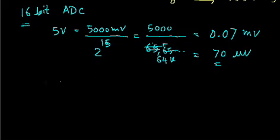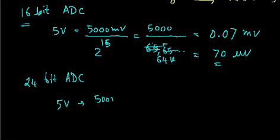However, there is a problem also. Suppose if we go to 24-bit ADC, then it will be 5 volt corresponds to 5000 millivolt and 2 to the power 23.